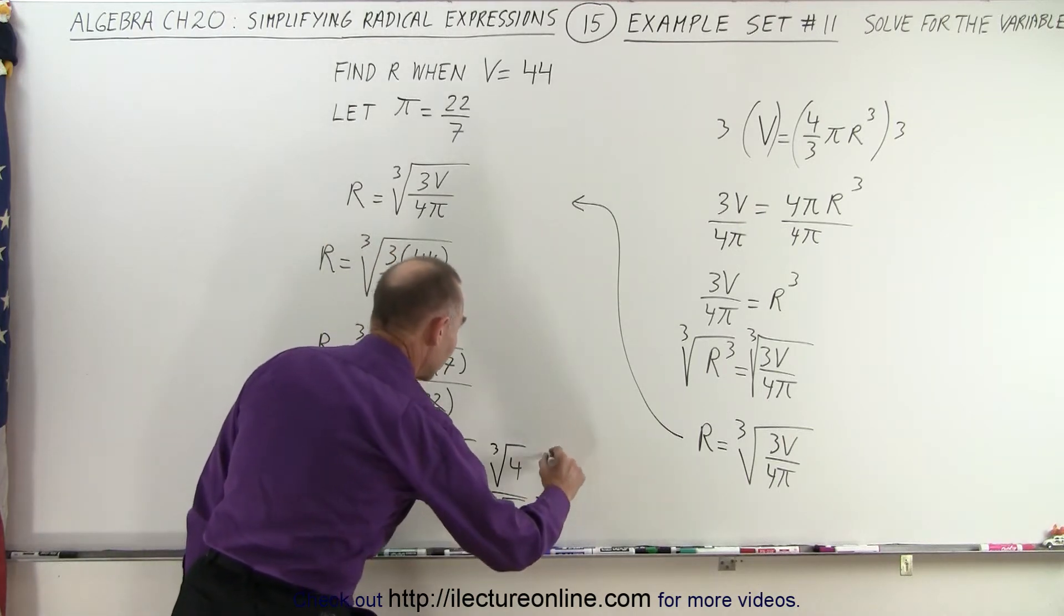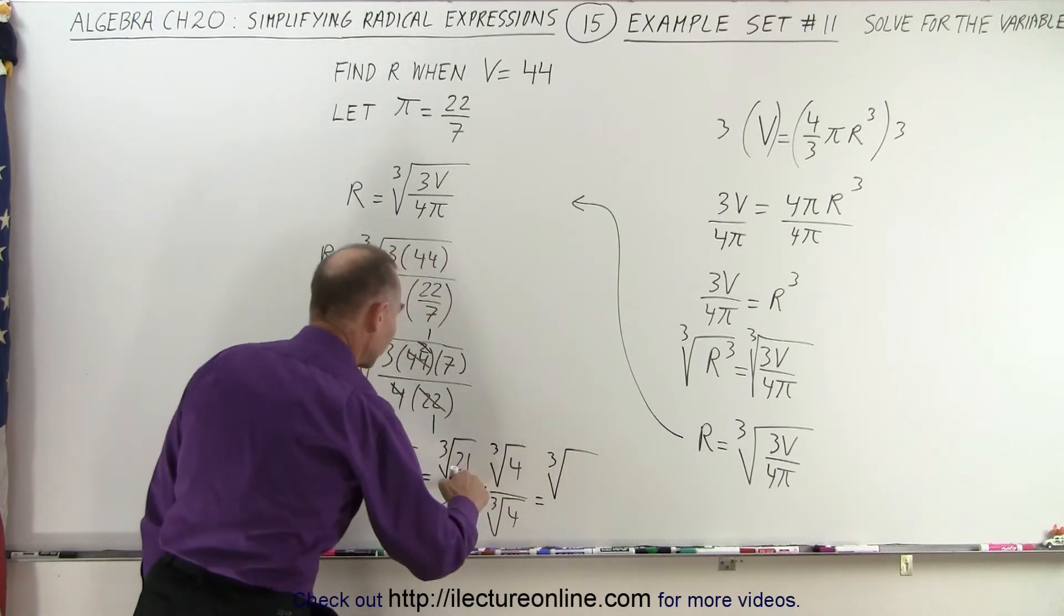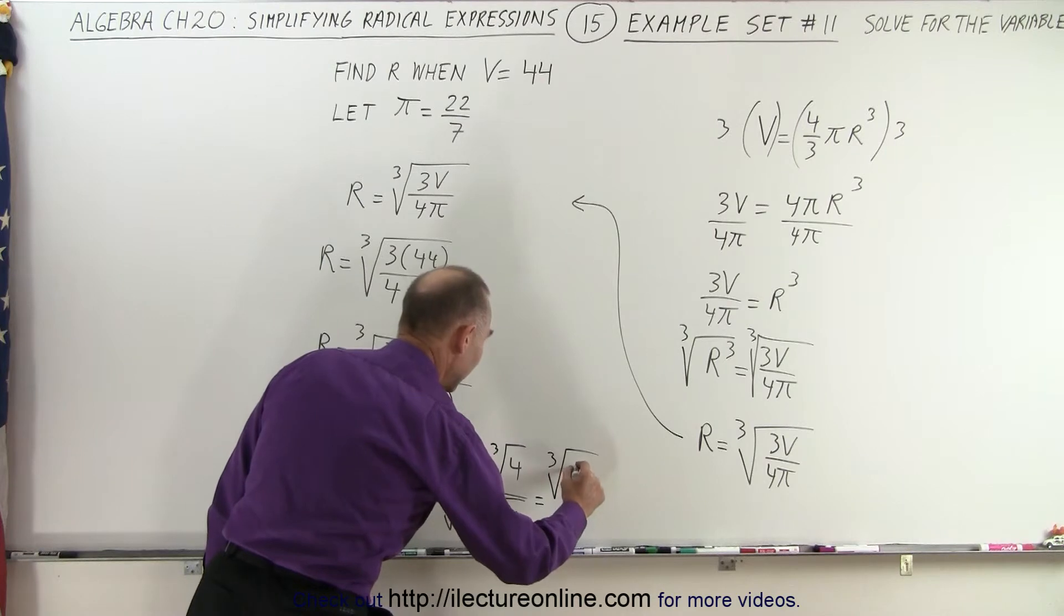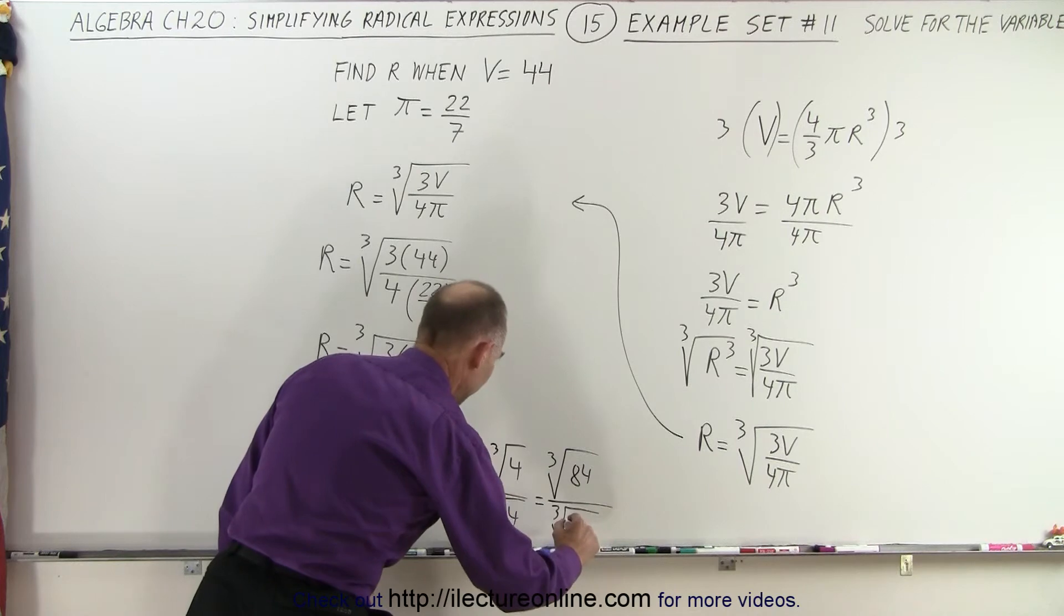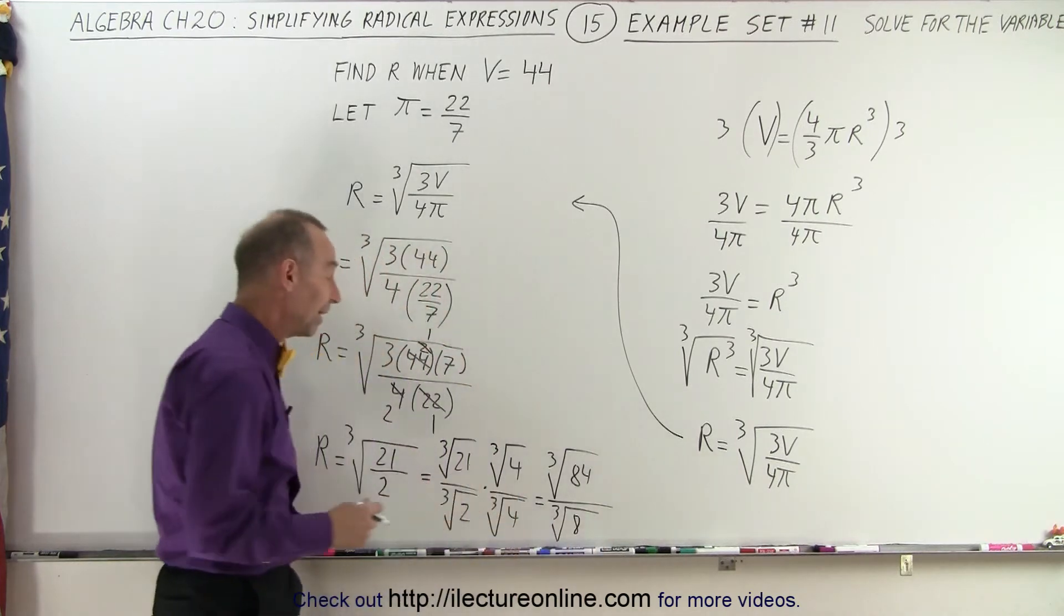So this can be written as the cube root of 4 times 21, which is 84, divided by the cube root of 8. And of course the cube root of 8 is 2.